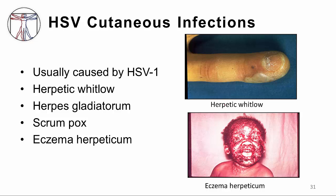Cutaneous infections with herpes are usually caused by type 1. One picture shows an example of herpetic whitlow on the finger of an infected individual. Another picture shows an example of extensive herpes on the face of a young child with eczema, called eczema herpeticum. Other types of skin infections include herpes gladiatorum, which can occur in wrestlers — especially on the bicep of a susceptible individual — and scrum pox, which are skin infections occurring in rugby players, presumably acquired in the scrums.